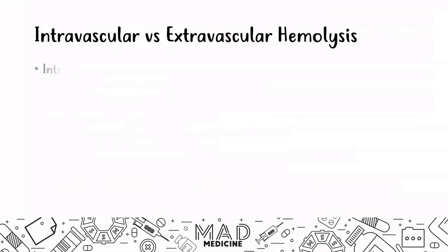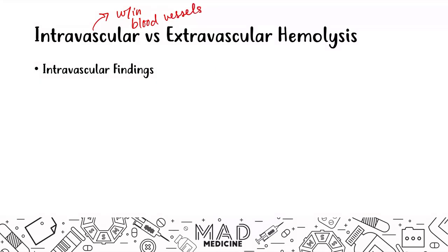Let's talk about intravascular and extravascular hemolysis. Intravascular hemolysis means it is happening within your blood vessels — that is where the hemolysis is happening. Extravascular hemolysis occurs mainly in your spleen, in the red pulp. When it comes to intravascular hemolysis, you are going to see schistocytes — helmet cells, also known as schistocytes — in the red blood cell smear, because your red blood cells are lysing in your blood vasculature.